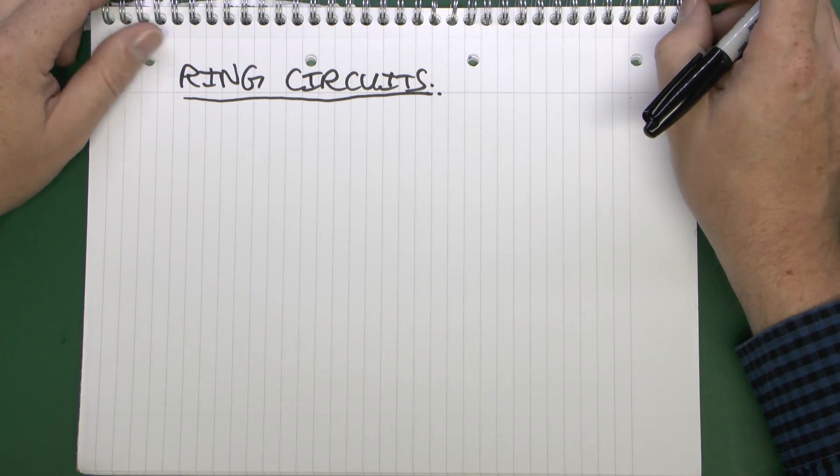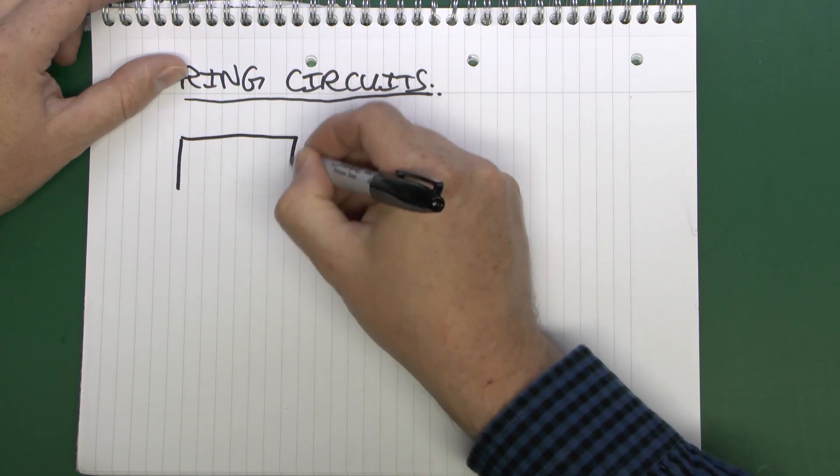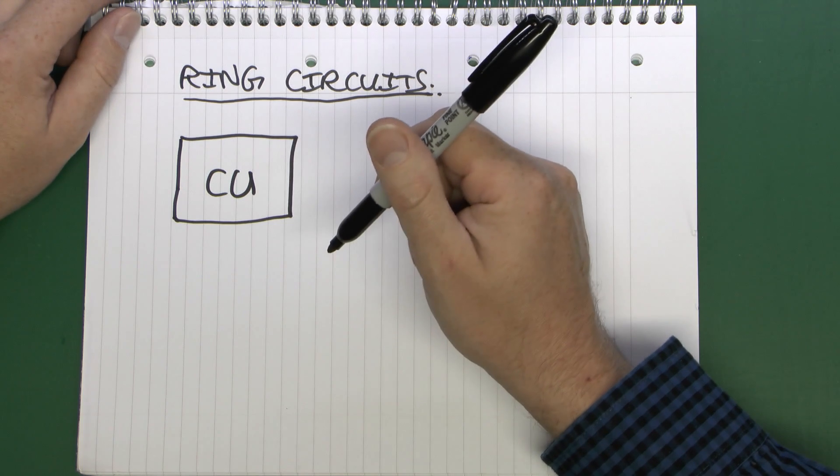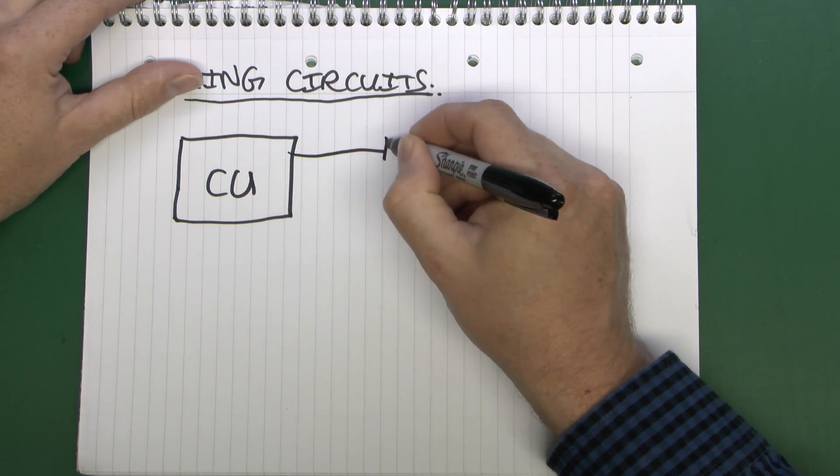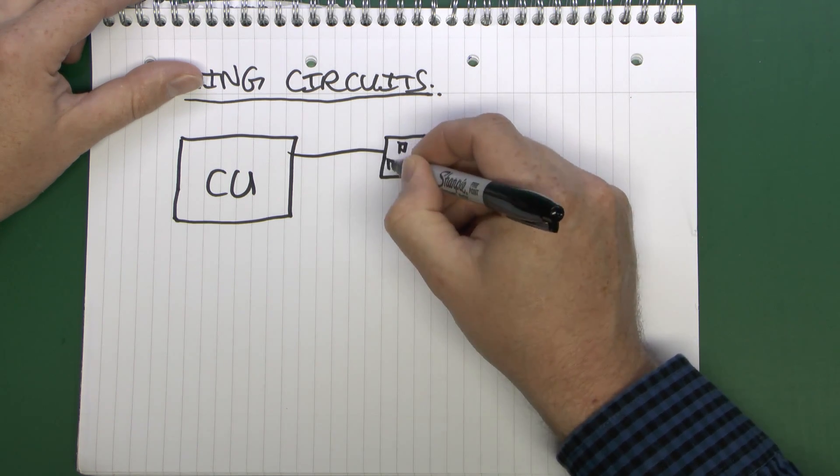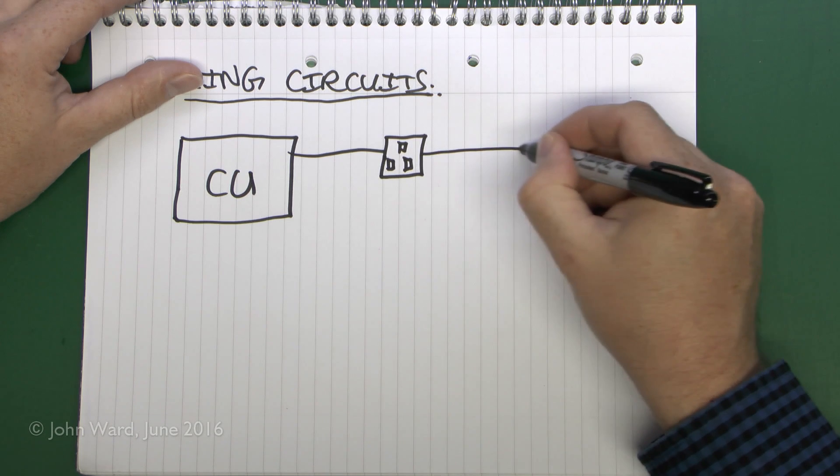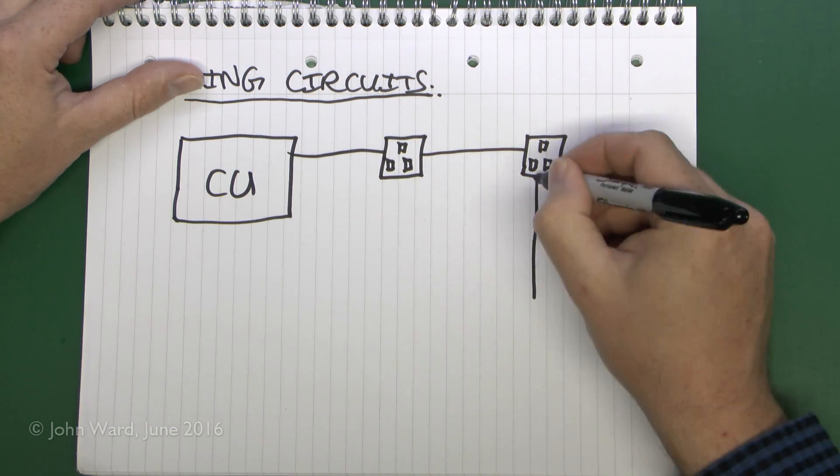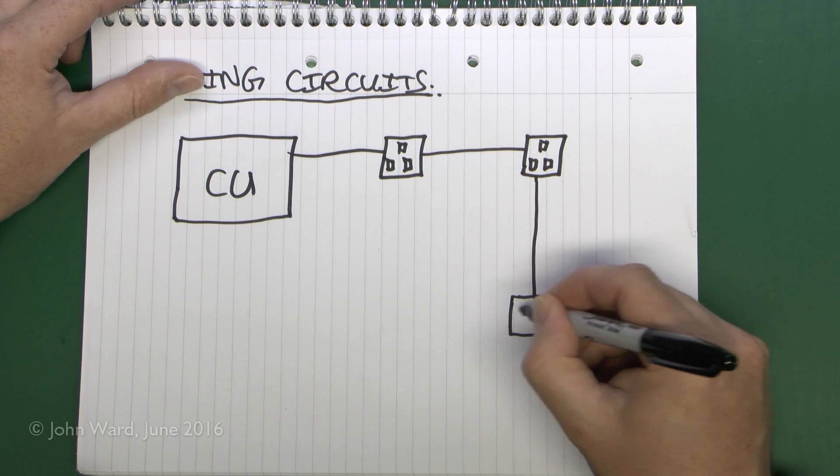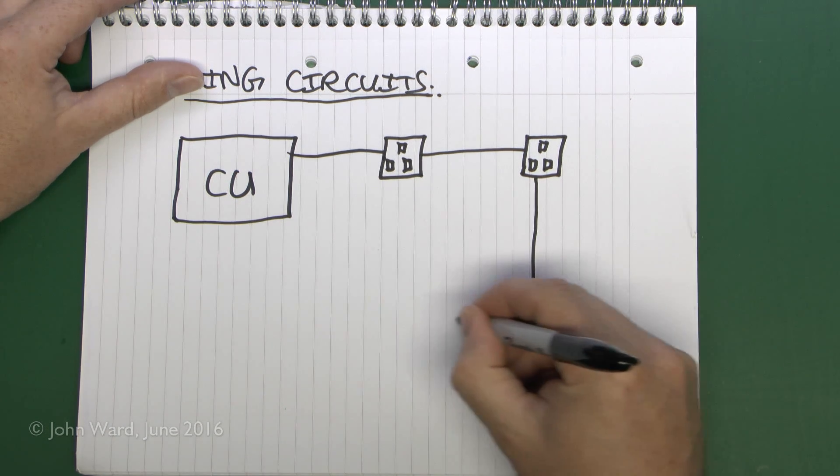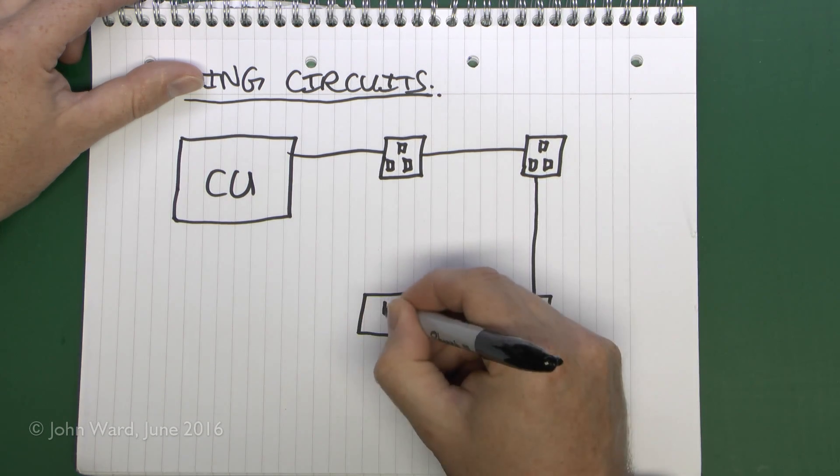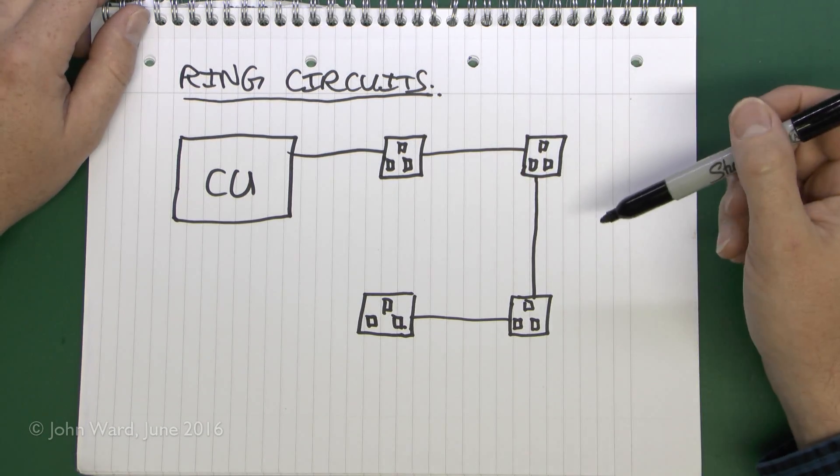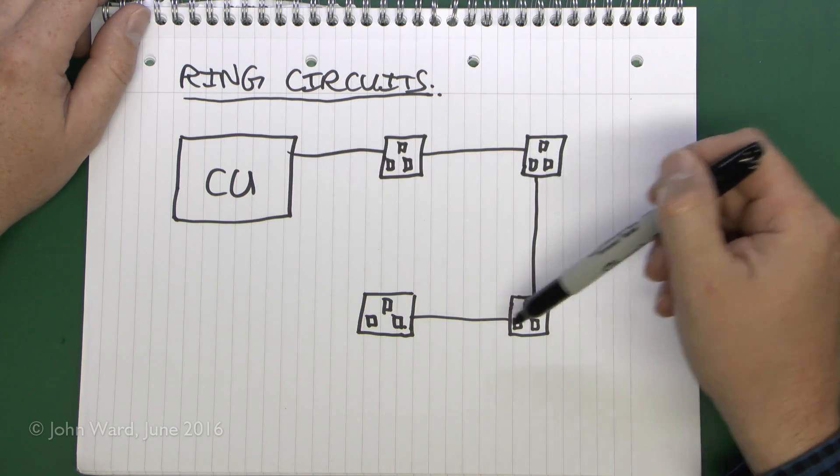A ring circuit, unlike pretty much every other circuit, starts at the consumer unit. So that's fairly similar to what we saw previously. This is only used for socket outlets. So it starts here at the consumer unit and goes to the first socket outlet on the wall, and as with other circuits you would have more than one, so here's another one. You can continue on to another socket outlet and even continuing on to a fourth one. This is basically a standard radial circuit as we saw in a previous video.